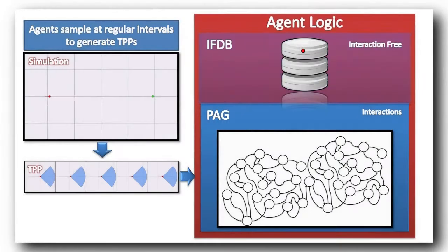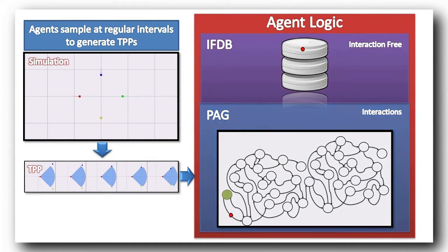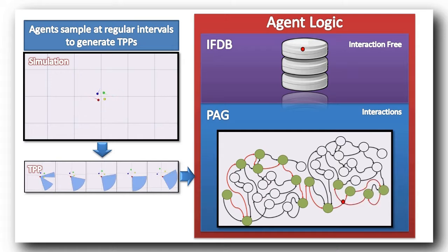At simulation time, agents generate TPPs and collaborate to select the best actions to follow. As soon as an agent senses some stimuli, it employs the perception action graph to handle interactions efficiently up to the moment they are resolved. Agents use the interaction-free database to select the trajectory towards their goals for as long as they don't have any stimuli in their field of view.